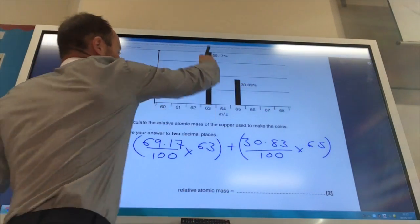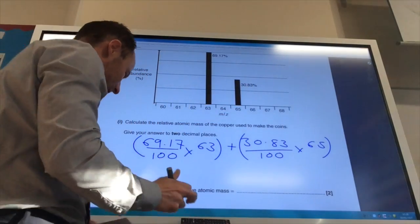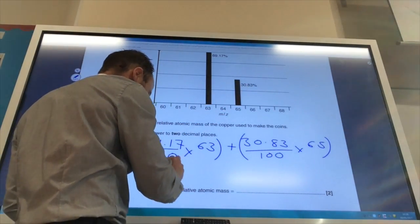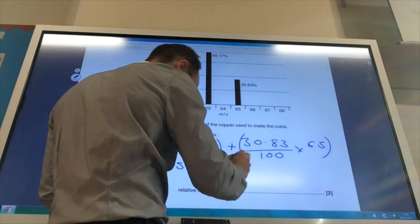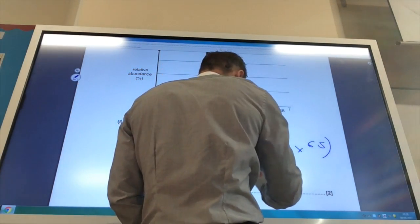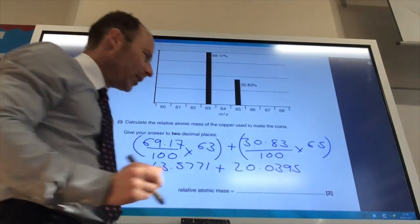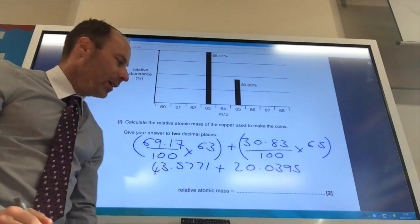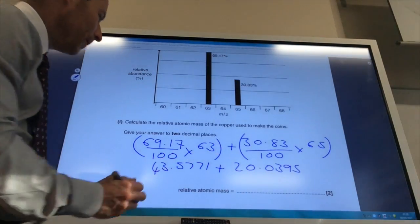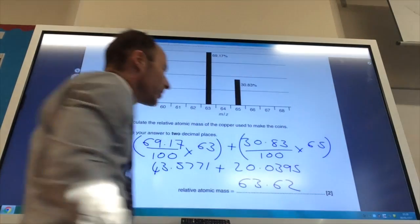So that one's that one, that one's that one. I would do those expressions separately. That gives you 43.5771. This gives you 20.0395. If you add those two numbers up, you get to 63.62. So 63.62 is your answer, because remember they want it to two decimal places.